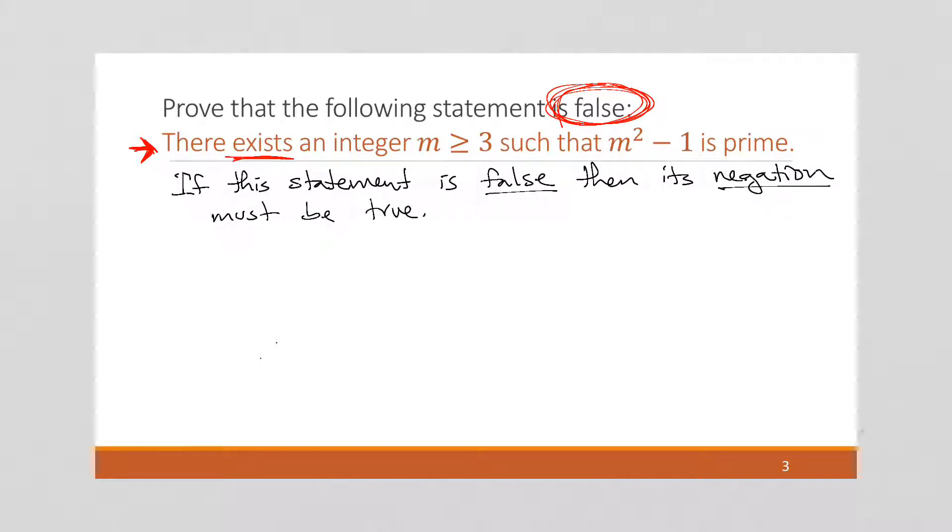Now, with direct proofs, we only know how to prove things true. So in order to prove the given statement false, we need to actually find its negation and prove that the negation is true.